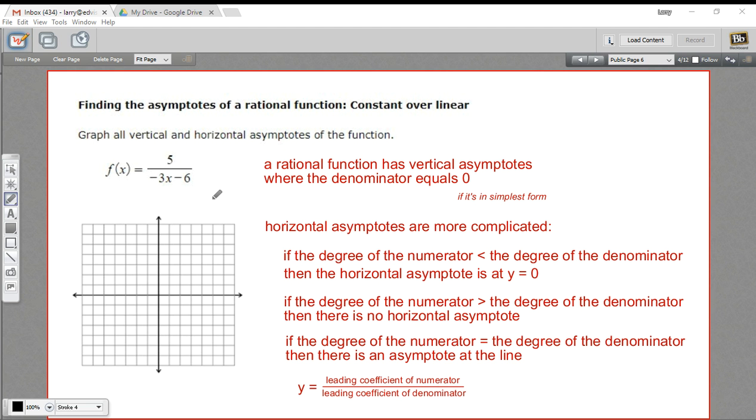If we want to graph a rational function, the first thing to do is to plot the asymptotes on our graph. That's going to give us the boundaries of the parts of the rational function, so it's a good first step.